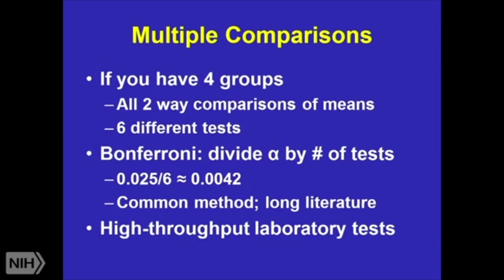So what about multiple comparisons? If you have four groups and you want to do all two-way comparisons of means, you have six different tests. But sometimes you say, well, I have four groups — one placebo arm and three different doses — and I actually just want to compare each dose to the placebo; I'm not going to compare the doses to each other. So you have to figure out exactly how many tests you really are going to run.